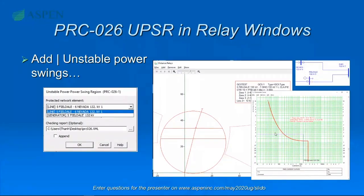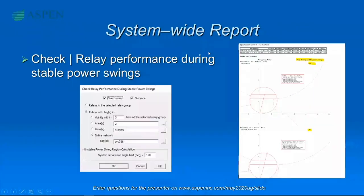What's new recently: in February, right before this whole COVID situation started, we sent out version 14.8 of one-liner online. We almost got the relay database and line constant line database shipped at the same time, but we couldn't, so those two are coming as well. There are some noteworthy enhancements in 14.8.